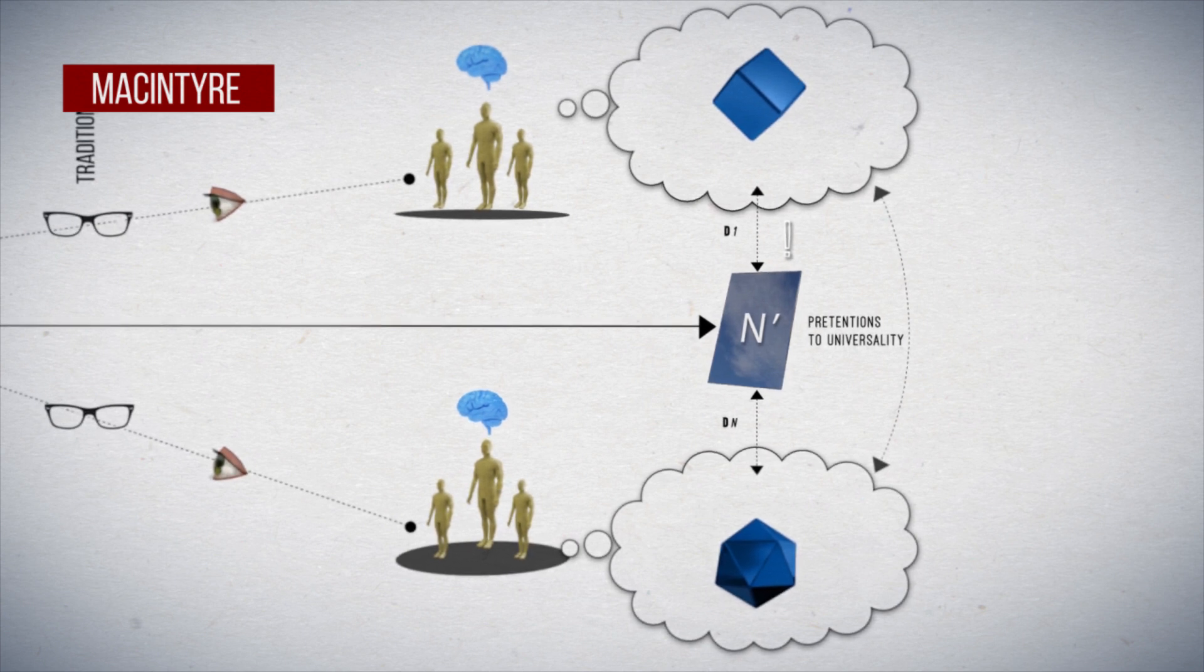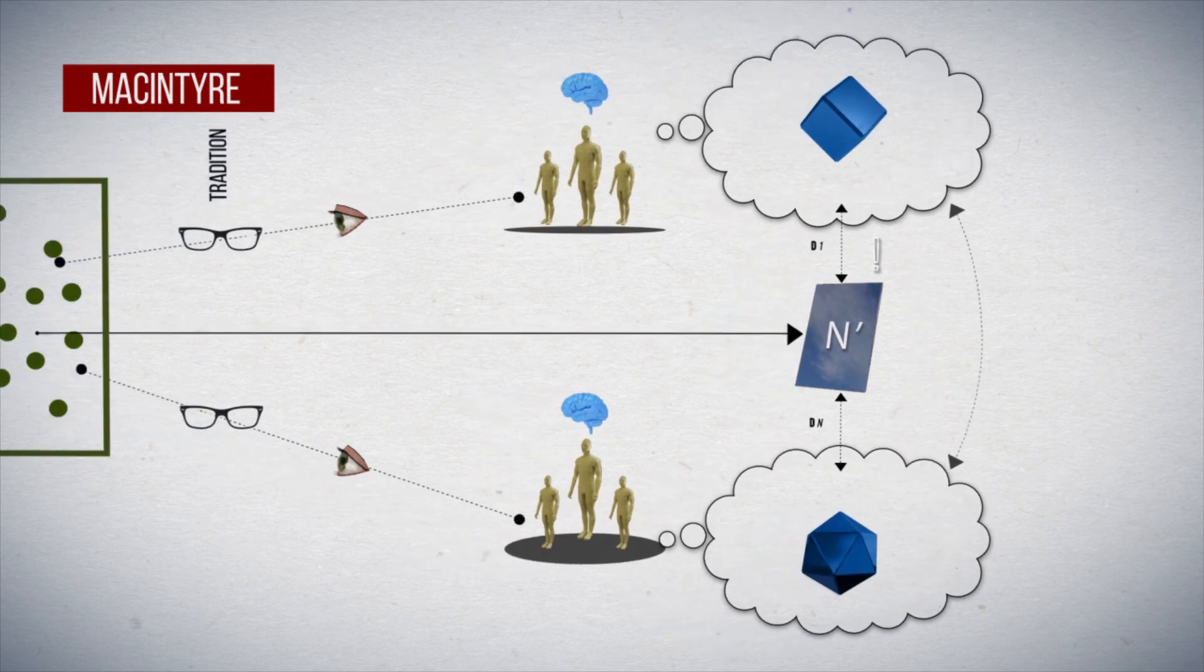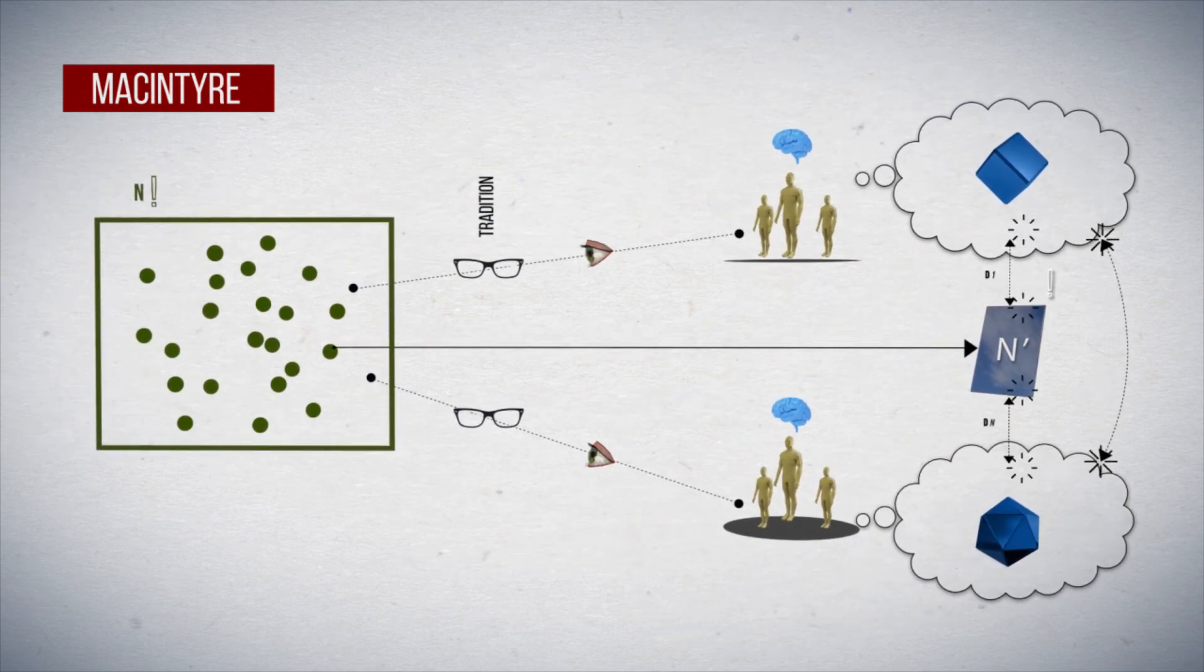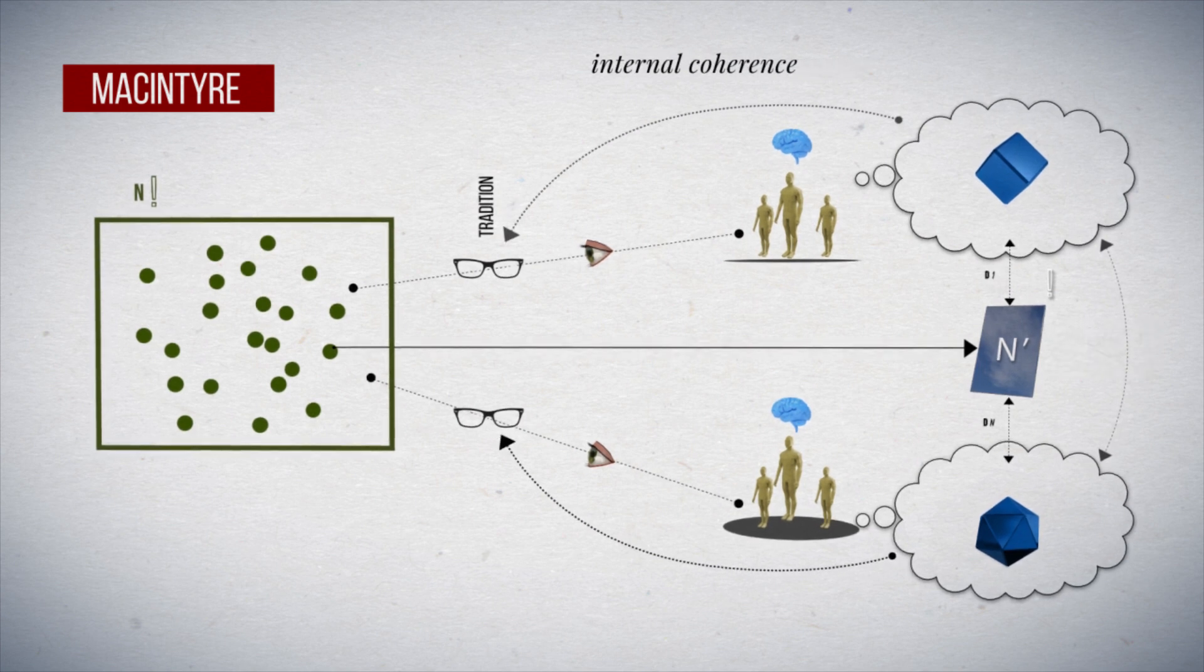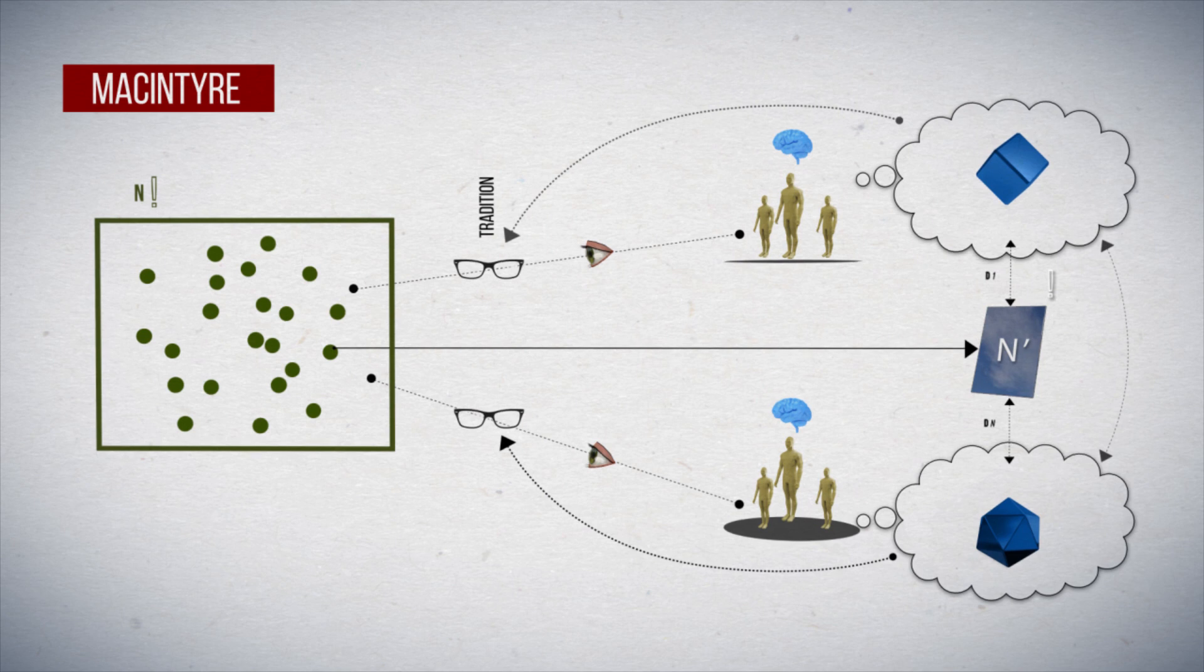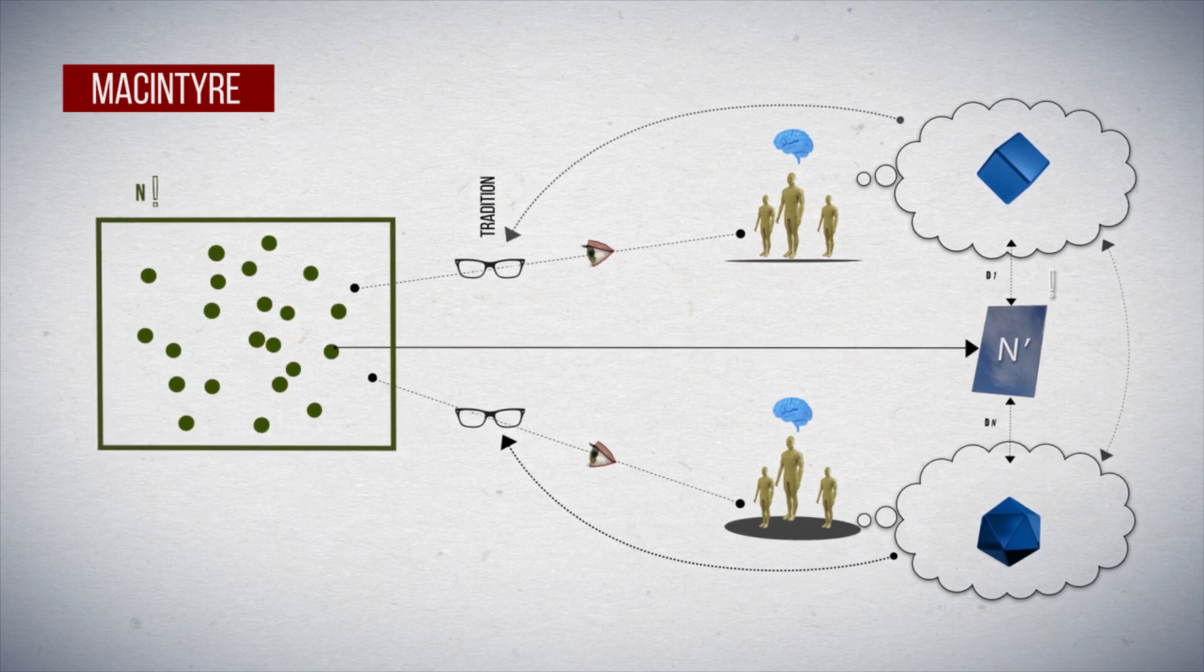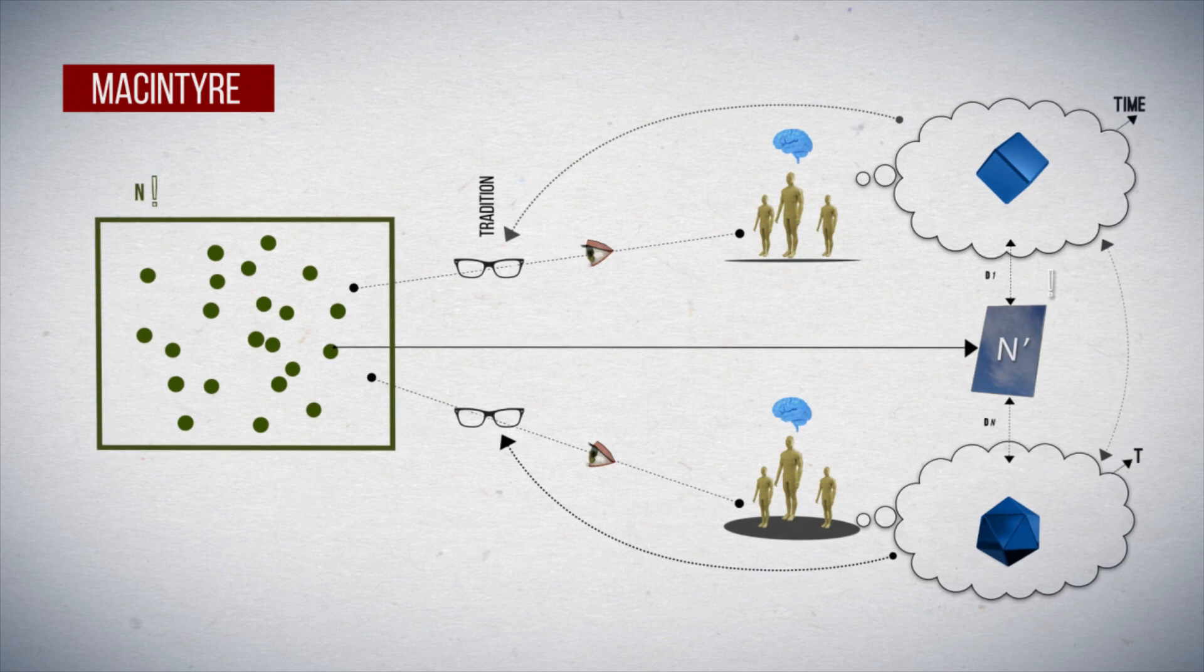In fact, for MacIntyre, the acceptance of a traditional construct depends both on its external validity and on its internal coherence with its own tradition. Hence, constructs are developed by their communities over time, based on these criteria. Similarly,